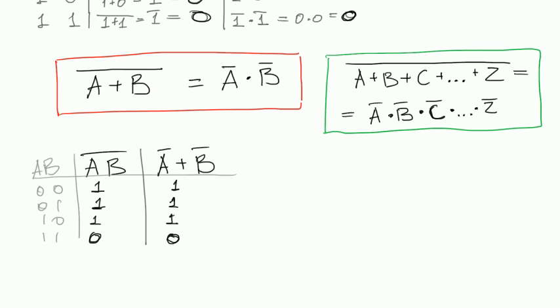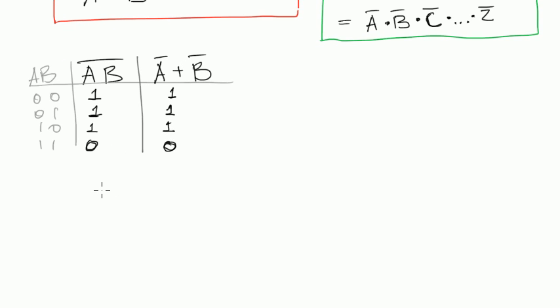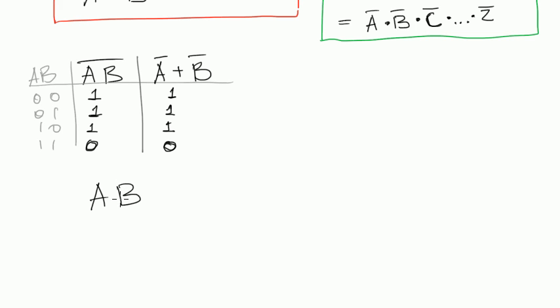And so we can say that these two are also equal to each other. So let's write it down as well. A B negated is always for all variables equal to A negated plus B negated.